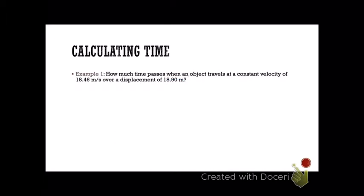In the same way, we can calculate time, provided that we know velocity and displacement. So how much time passes when an object travels at a constant velocity of 18.46 meters per second over a displacement of 18.90 meters?